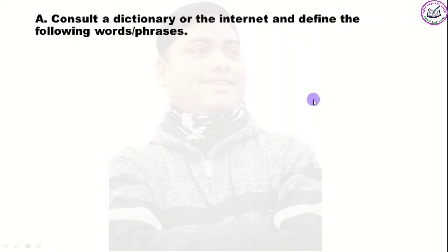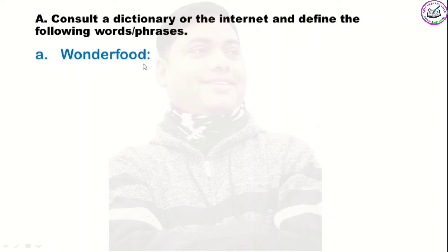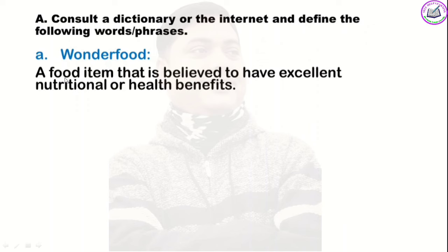The first word is 'wonder food.' 'Wonder' means something beyond our thought or imagination, and 'food' is what we eat. So 'wonder food' means food that has beyond the usual nutritious value — food with high nutritional value. The definition is: a food item that is believed to have excellent nutritional and health benefits.